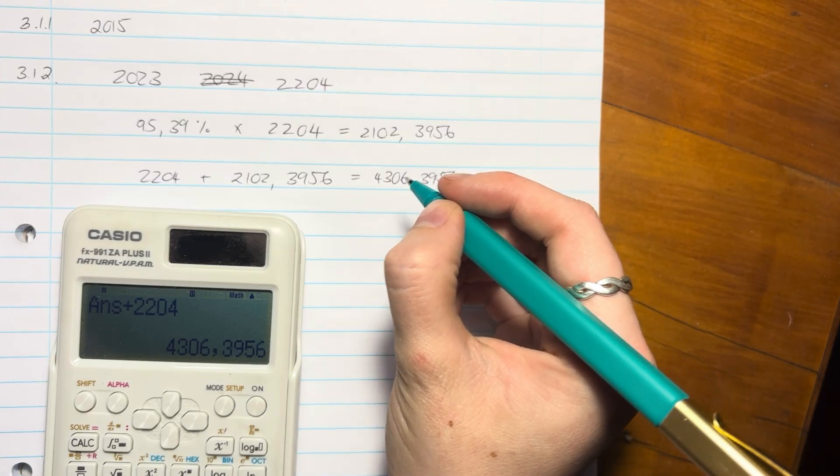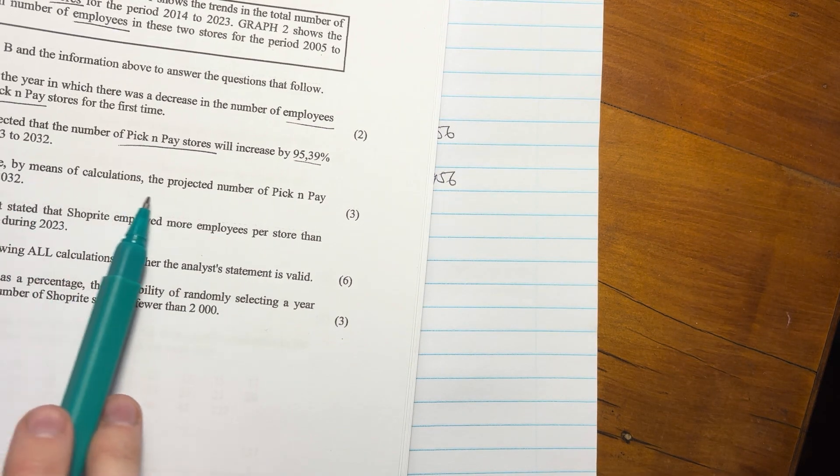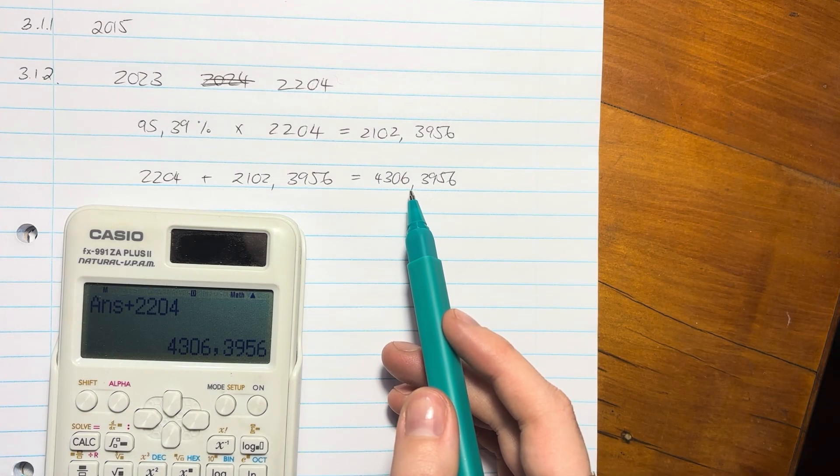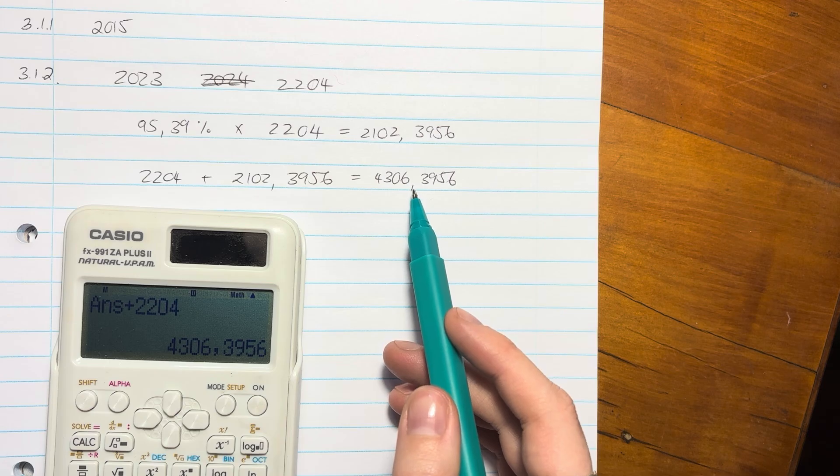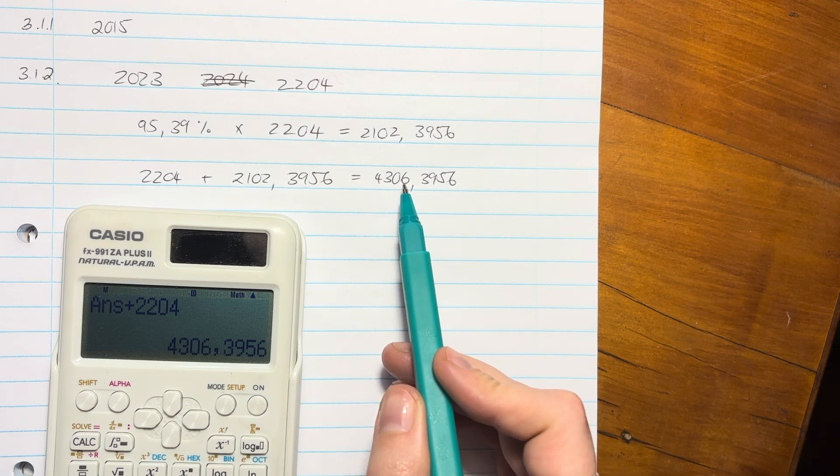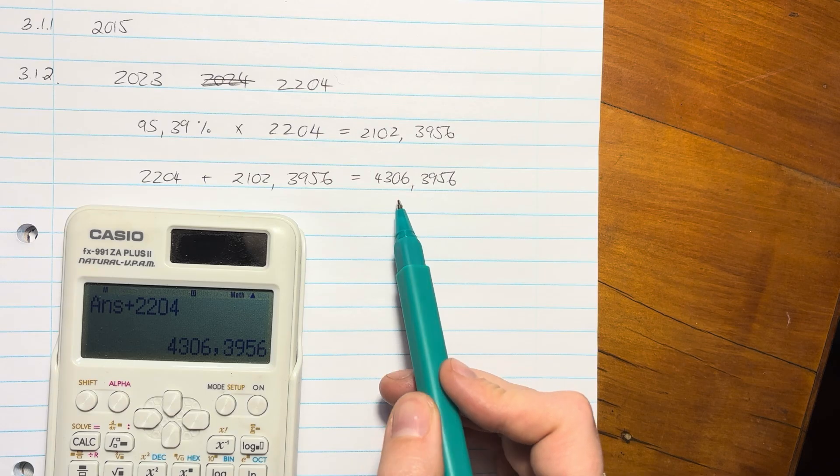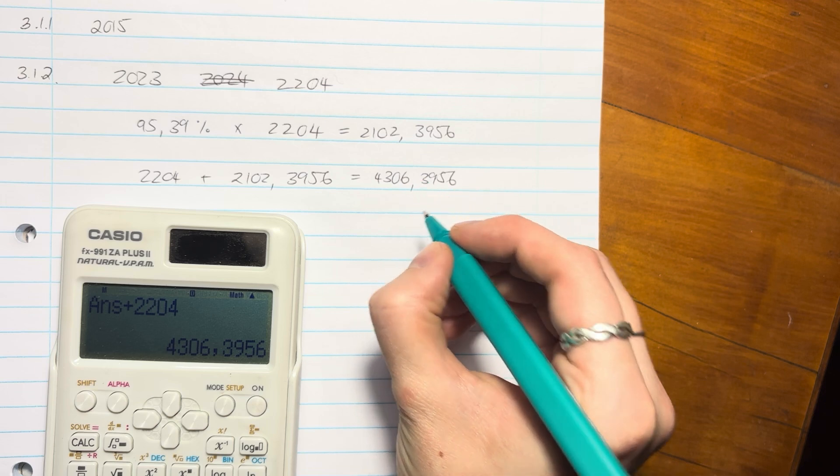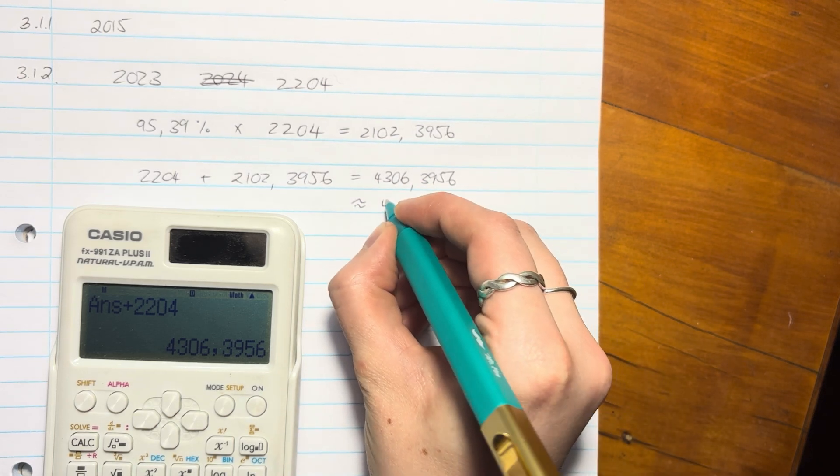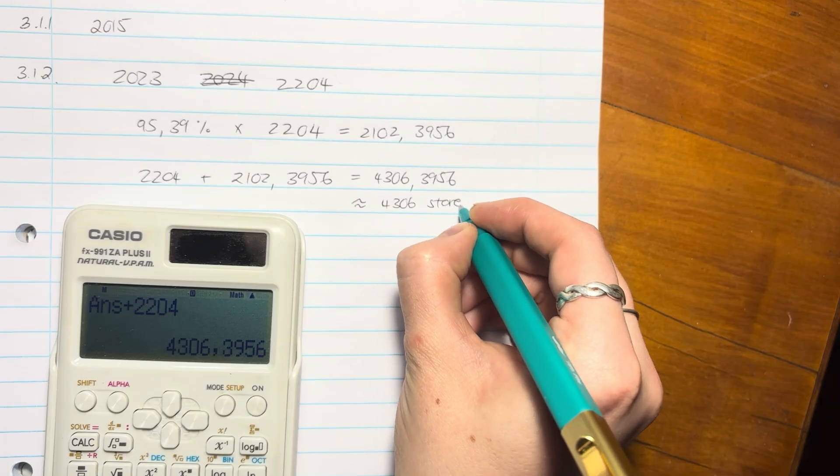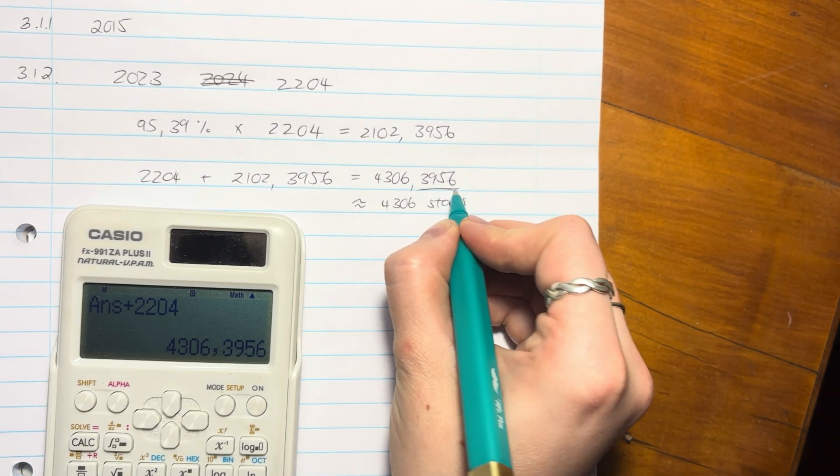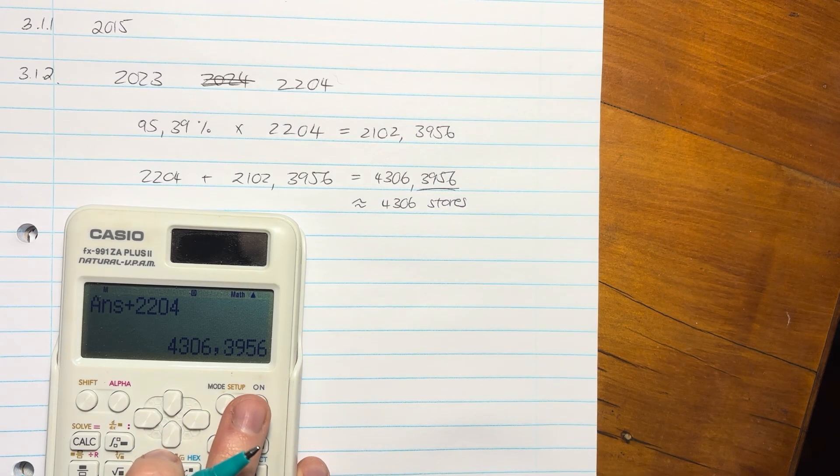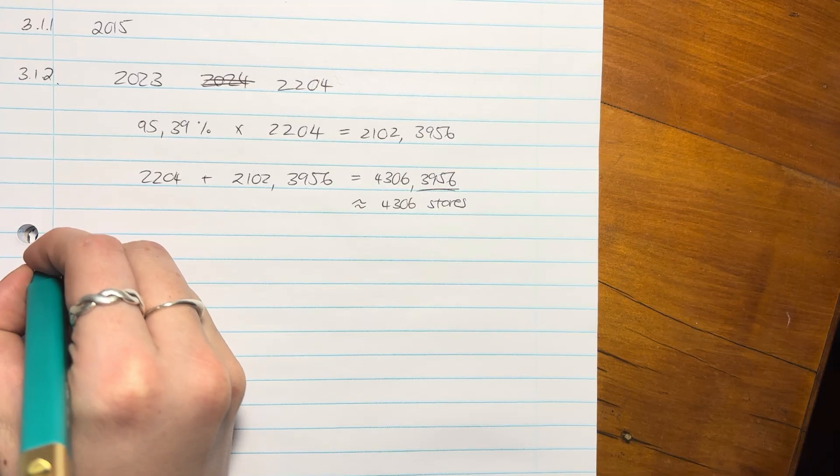So it did say here, determine by means of calculation the projected number of stores. Do you believe me that that's not really a number of stores, right? You can't necessarily have 4306.3956 stores. So over here, you have to round it off so that it's an actual amount of stores. So I'd rather say, well, this is equivalent to 4306 stores, okay? So you can't get little fractions of stores. You either have a store or you don't. So just note that sort of logical reasoning, does this make sense when it comes to the answers here?